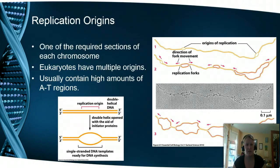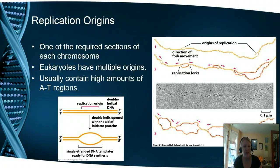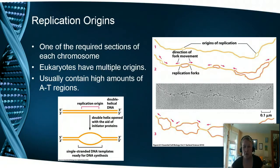We start replication at the origin. Some chromosomes have multiple origins, some have just one. Eukaryotes have multiple because given how long our chromosomes are, we need multiple origins to get through replication as fast as possible. These origins of replication usually contain a lot of adenine-thymine bases. In PCR, we need high temperatures to break those bonds and open the DNA up, but in the cell we have enzymes like helicase that do that for us. We only keep a very small segment open — as that segment is replicated, we open a little bit more and a little bit more.